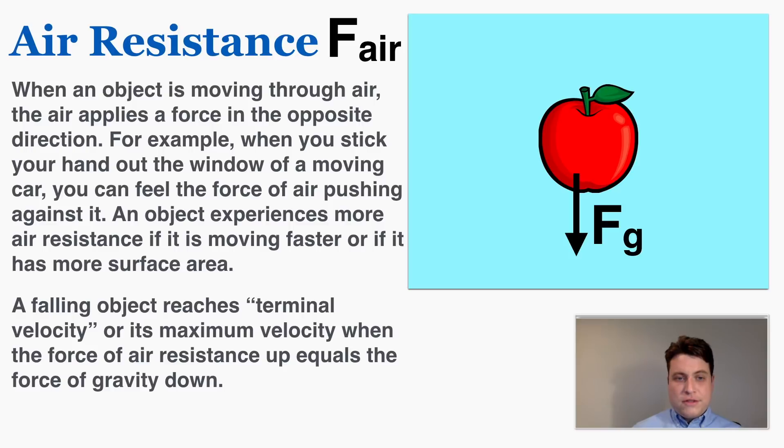The force of air resistance happens when an object is moving through air. The air applies a force in the opposite direction. For example, when you stick your hand out the window of a moving car you can feel the force of air pushing against it. An object experiences more air resistance if it is moving faster or if it has more surface area.